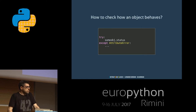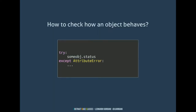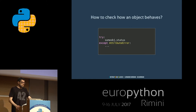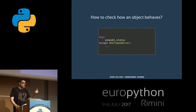So the question is: how do we check how an object behaves? One thing we can do is try and call the method — for example, access it without parentheses, just asking for the method. Python raises an AttributeError if the object doesn't contain the status method. But I'm not actually using it. This is three lines of code to perform one check that doesn't actually do anything.